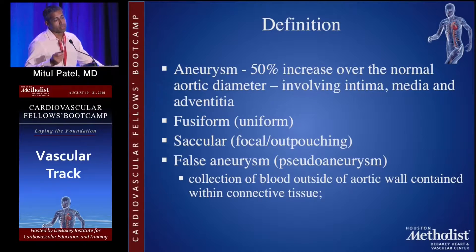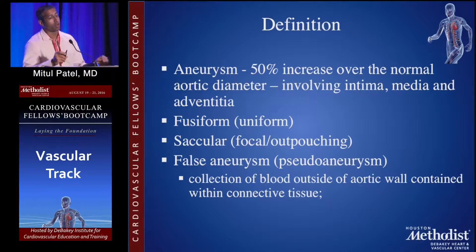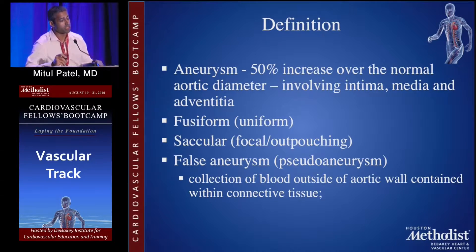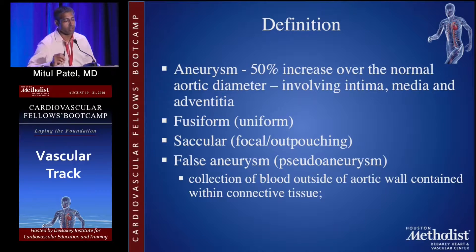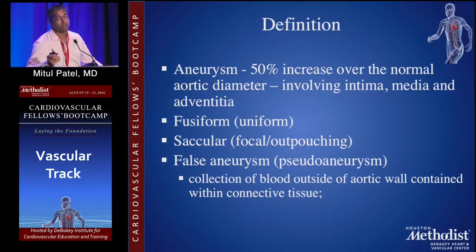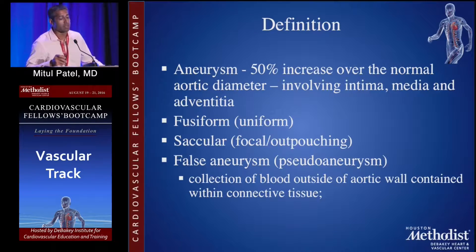An aneurysm is essentially a 50% increase over the normal aortic diameter involving all three layers. A fusiform aneurysm is a uniform dilation of the entire aorta, while a saccular aneurysm is a focal outpouching. False aneurysms, or pseudo-aneurysms, are essentially a collection of blood outside of the aortic wall contained within connective tissue.